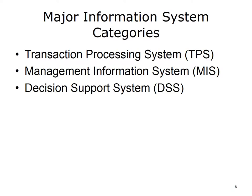With regards to information systems, there are three major categories: Transaction Processing System (TPS), Management Information System (MIS), and Decision Support System (DSS). Each will be defined in the next few slides.